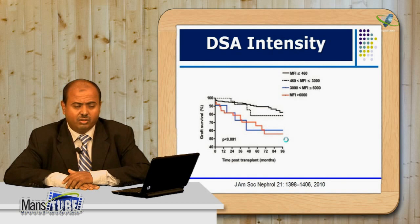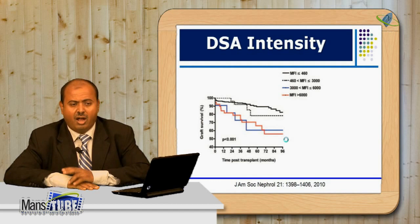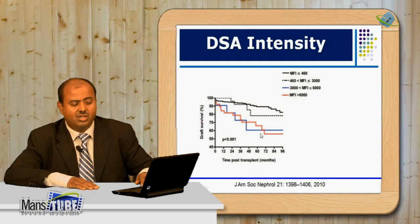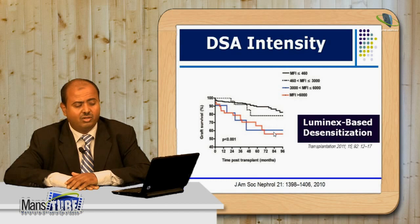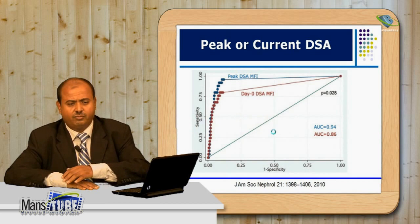Regarding antibody intensity: higher MFI reflects higher antibody concentration, and higher concentration correlates with lower graft survival. MFI above 6,000 is associated with significantly lower graft survival. Some authors recommend that if MFI is high, desensitization with IVIg and plasma exchange before transplantation should be considered.